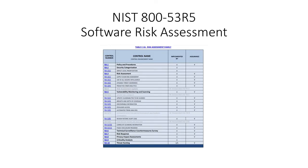Here's the enhanced risk assessment family for RA. RA1 is policies and procedures. RA2 is security categorization. RA3 is risk assessment. RA5 is vulnerability monitoring. RA6 is technical surveillance and counter-measuring survey. RA7 is risk response. RA8 is privacy impact. RA9 is critical analysis. And RA10 is threat hunting.